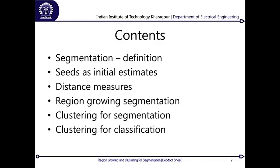What these seeds are as initial estimates for region growing is what I will discuss, followed by a distance measure — used to determine which pixel is similar to these seeds so that you can include them into your region of interest and expand your segment. From there, we have an iterative process for region growing for segmentation, with a practical example where I show you how to write this in code or solve it as a paper problem.